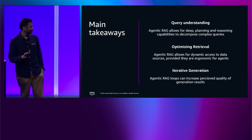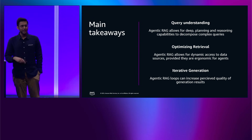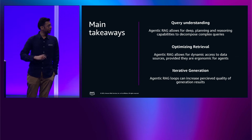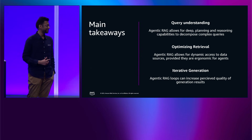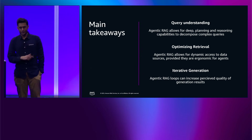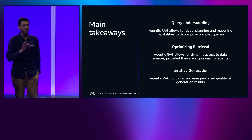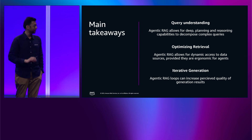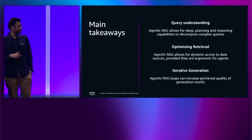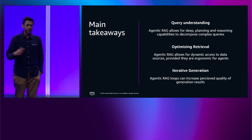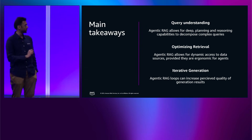The main takeaways: we're able to use agentic retrieval where traditional RAG would fail, with three specific benefits. First, query understanding — deep planning and reasoning to decompose complex queries and serve users with complicated preferences. Second, optimizing retrieval — agentic RAG provides dynamic access to ergonomic data sources to optimize the context retrieved for generation. Finally, iterative generation — looping increases perceived quality of results. We're comfortable sacrificing some latency cost to ensure that couple goes on a great first date.